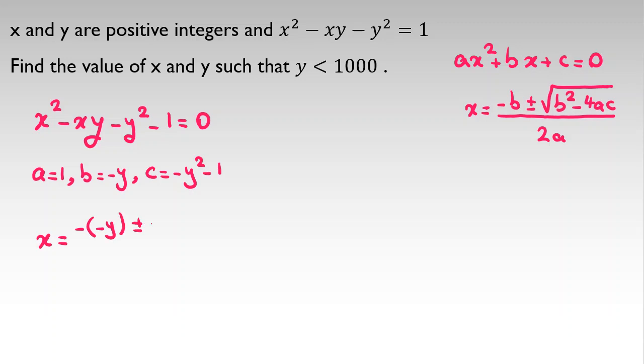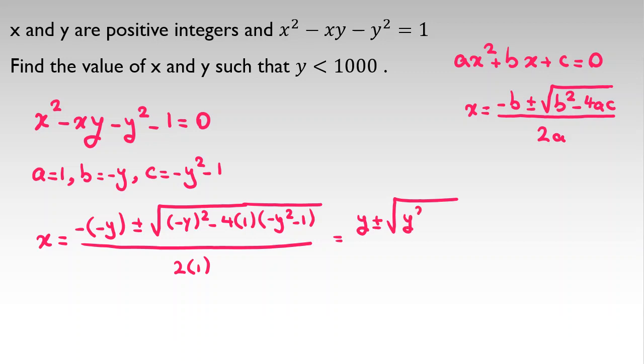So x is negative b, which is -(-y) ± √((-y)² - 4a times c, which is -y² - 1) all over 2a. It will be (y ± √(y² + 4y² + 4))/2, which equals (y ± √(5y² + 4))/2.